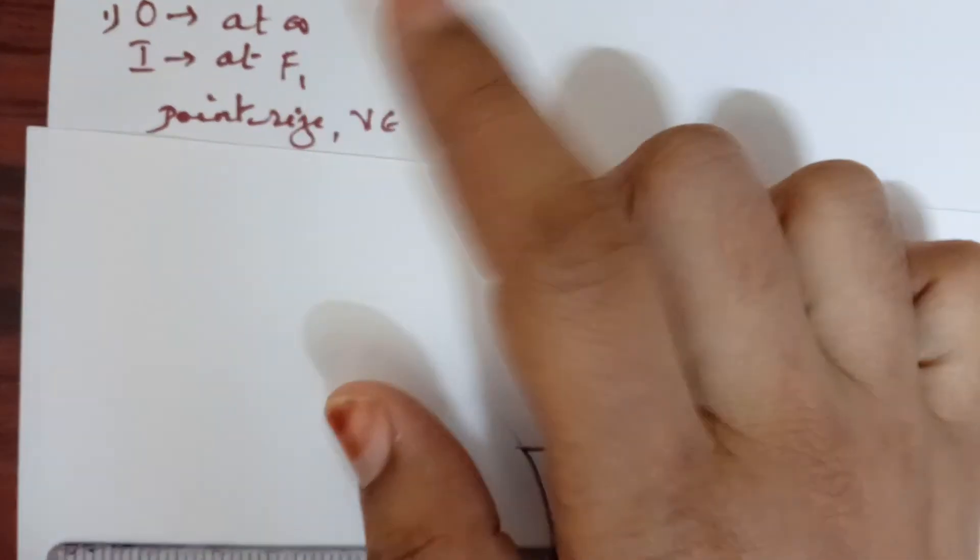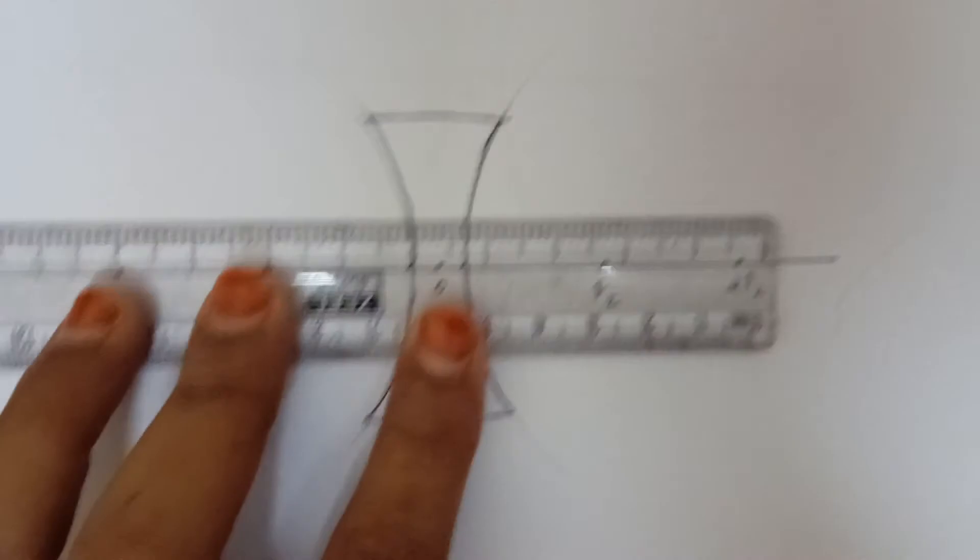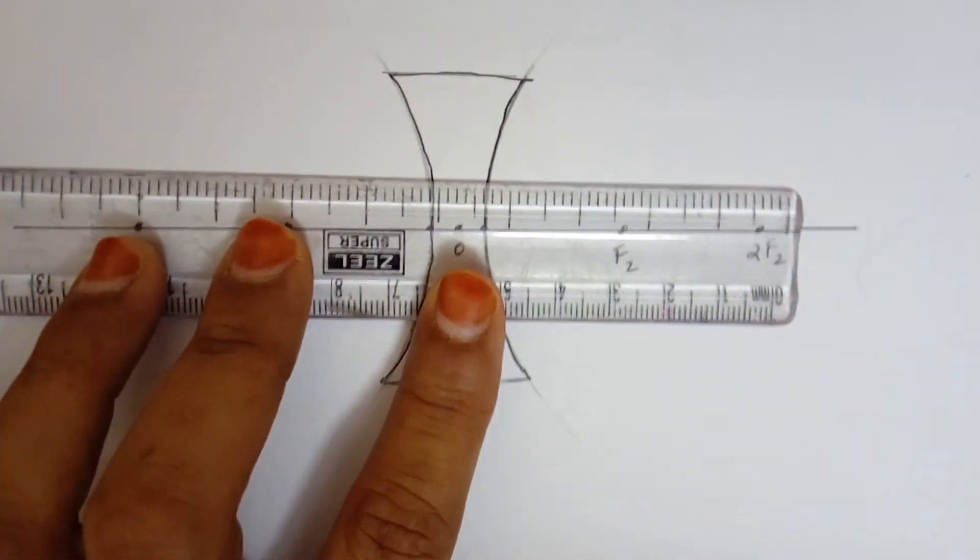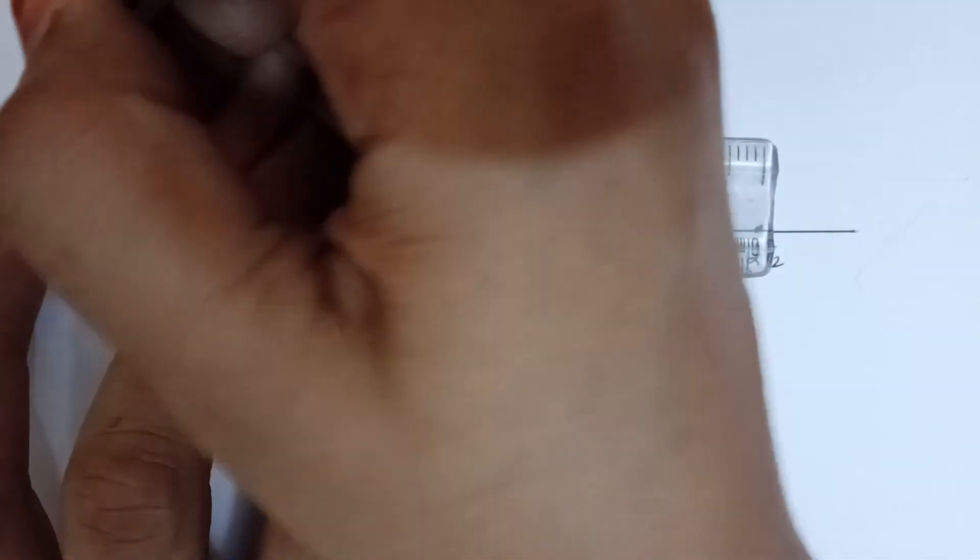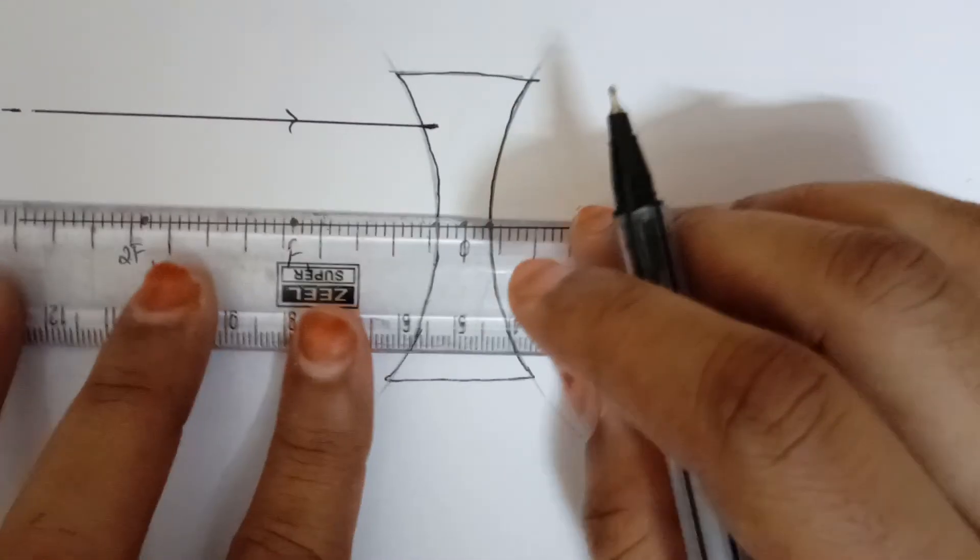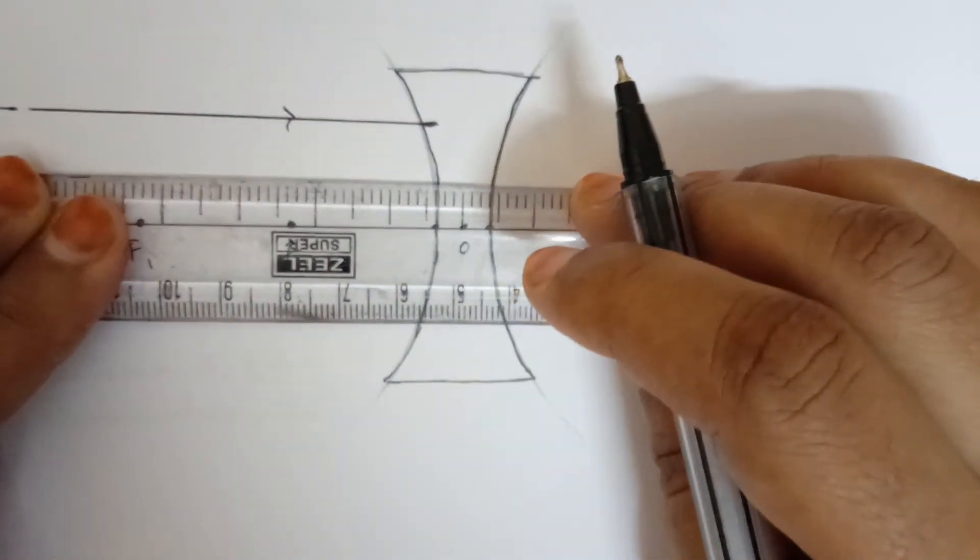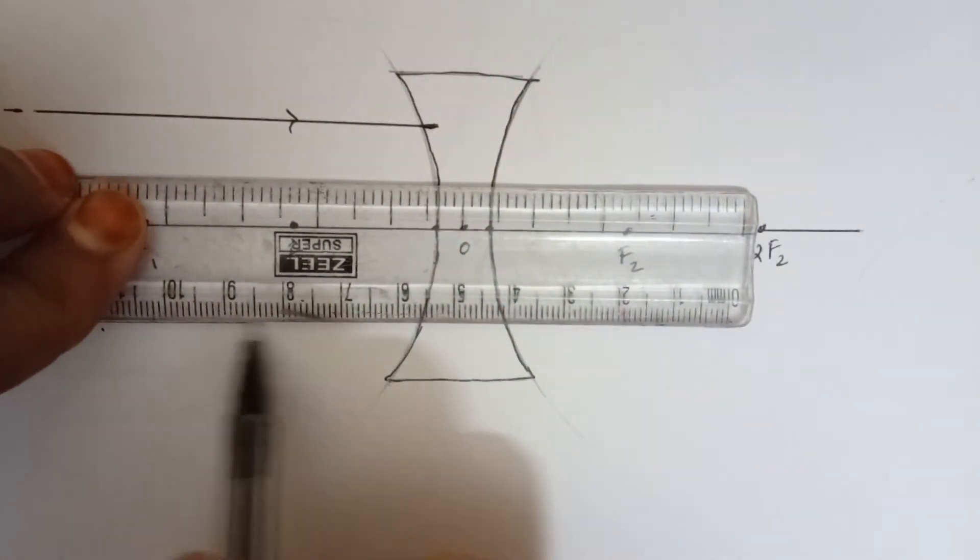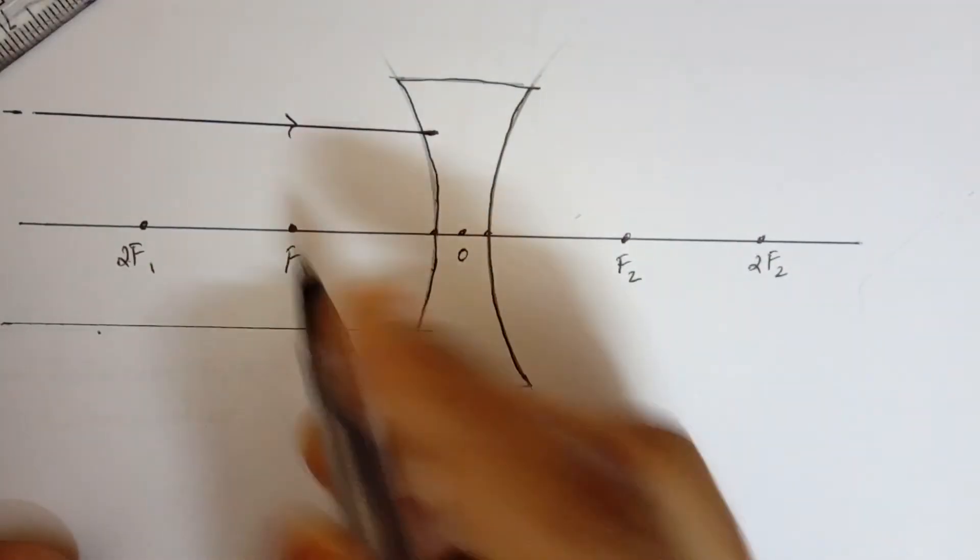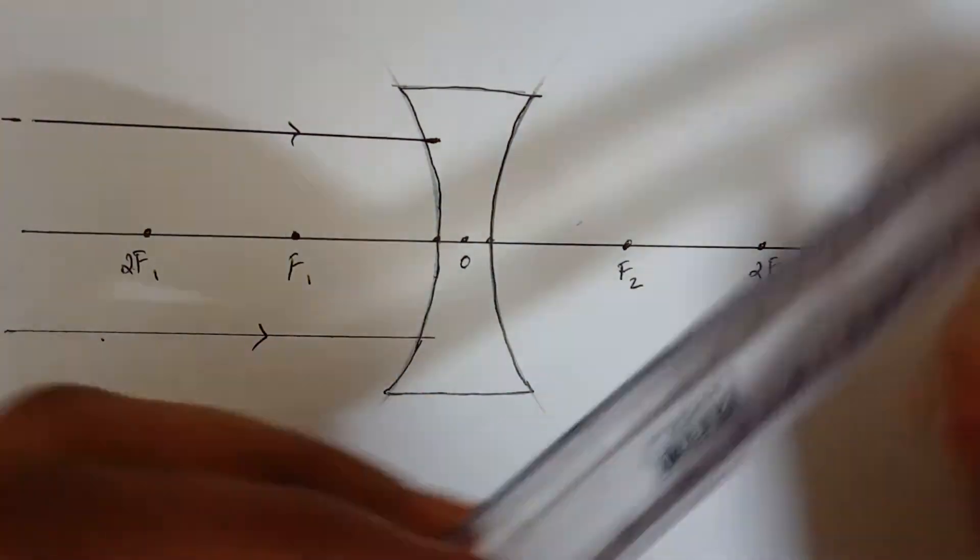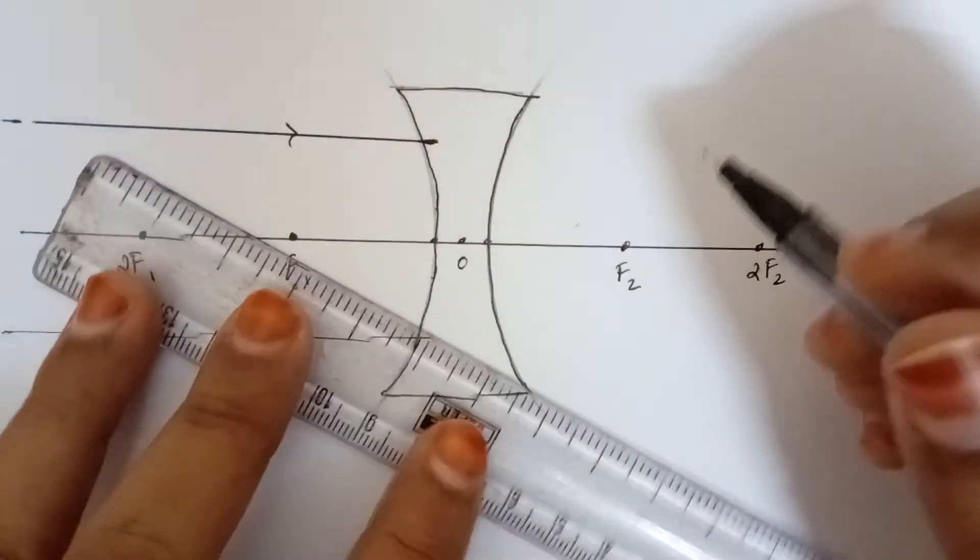So my first illustration is an object is at infinity. My image is supposed to be at F1. So when the object is at infinity, we need to show the rays of light running parallel to principal axis. So here comes my one ray of light and here comes my another ray of light. I know this is a diverging lens.